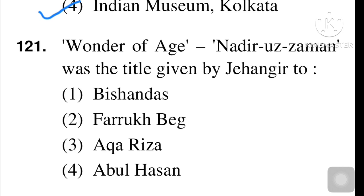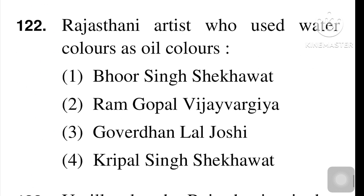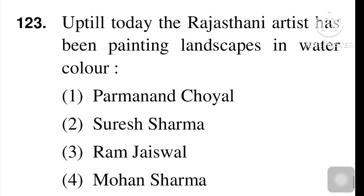The title 'Nadir-ul-Zamani' (Wonder of the Age) was given by Jahangir to Abul Hasan — option number four is the right answer. Next question: the Rajasthani artist who used water color as oil color — option number one, Bhor Singh Shekhawat, is the right answer. Next question: the Rajasthani artist who has been painting landscape in water color up till today — number three, Ram Jaiswal, is the right answer.